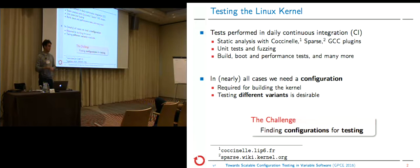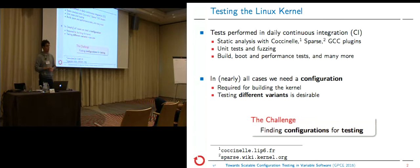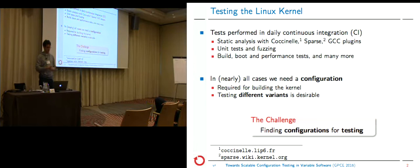The important part is that in nearly all cases we need a configuration. Why? Because we need to build software — it's not only compile testing. We really need to build software to make it executable. And in terms of software product lines or variability in general, it's desirable to test as many different variants as possible. So the key challenge is: how can we find different configurations for testing?